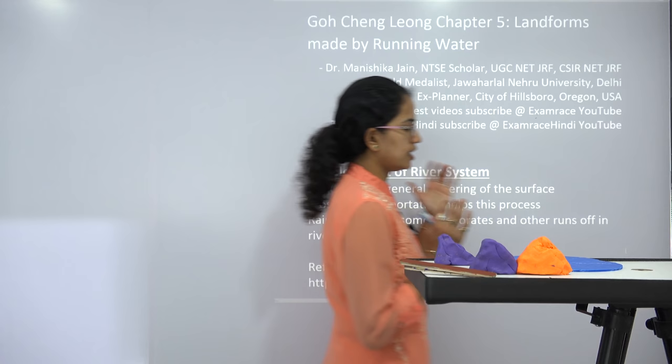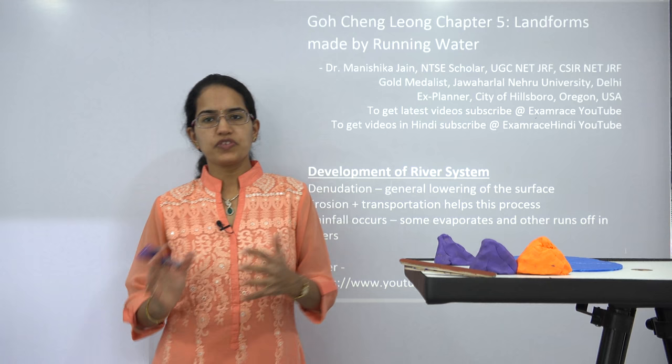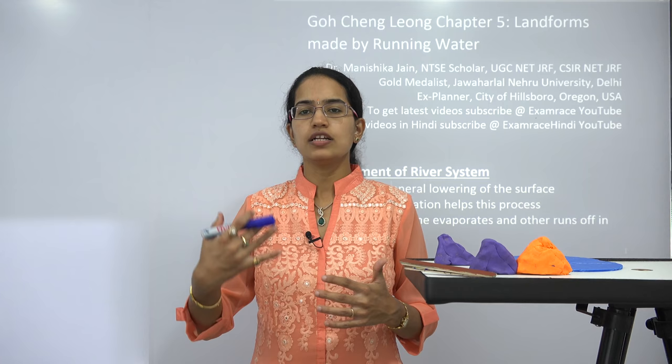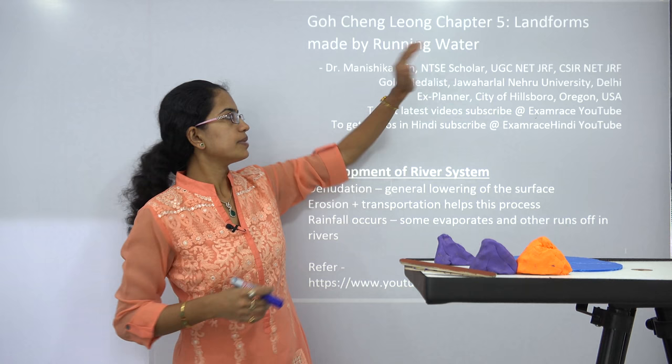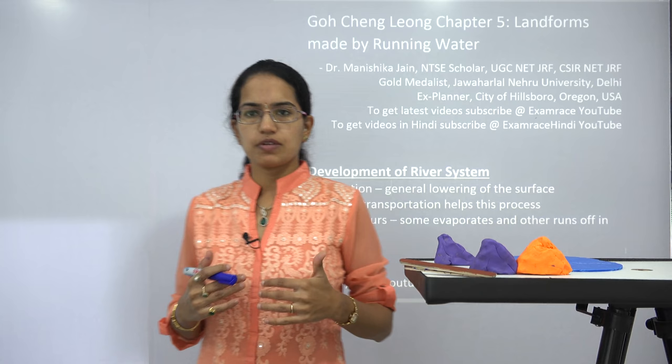Welcome. We will start with the next chapter — chapter five — where we will talk about the landforms that are formed by the action of running water. In the last classes we talked about the process of weathering and erosion. Erosion requires moving agents, which can be in the form of wind, water, snow, or ice. Today we will be talking about only water.